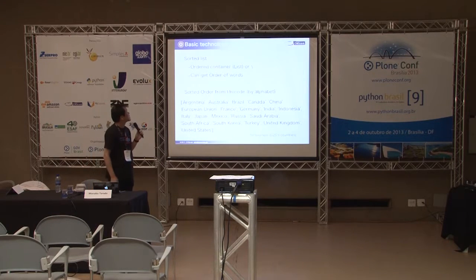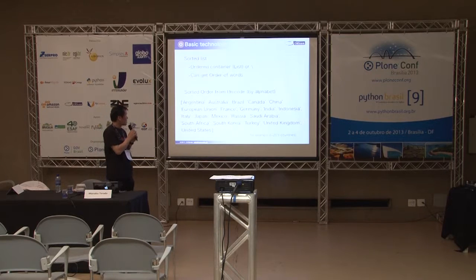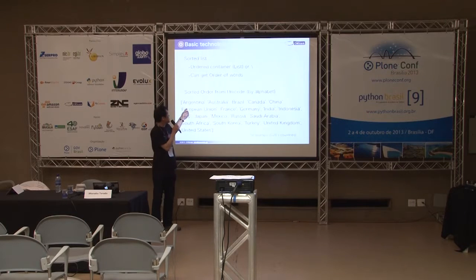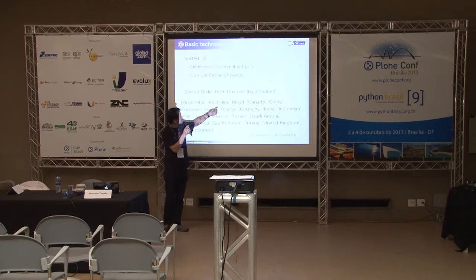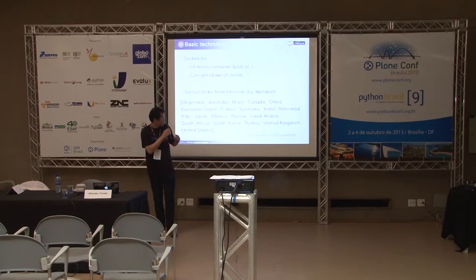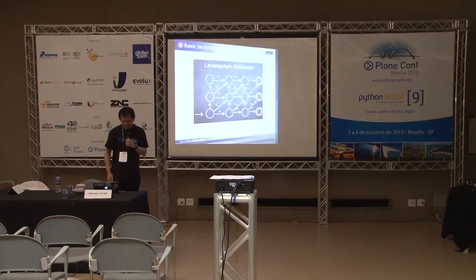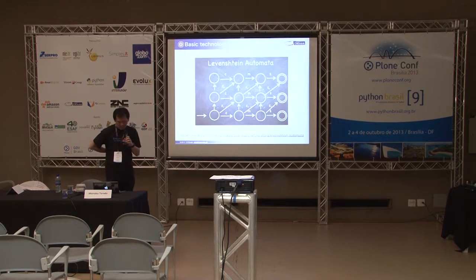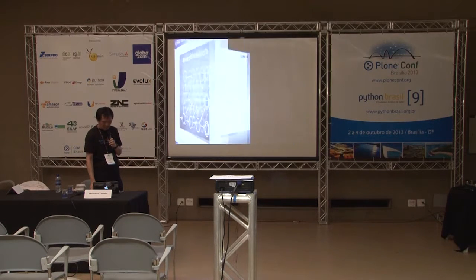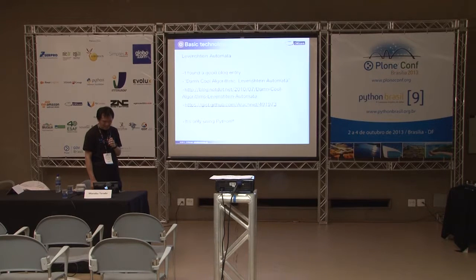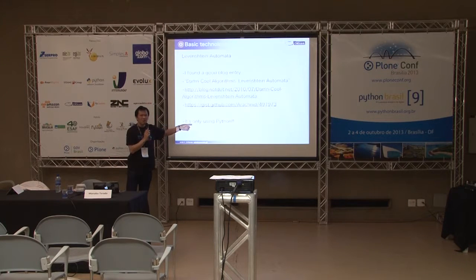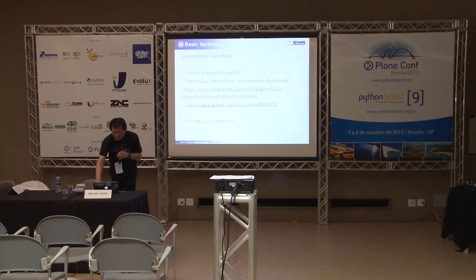Second keyword: sorted list. An ordered container can get the order of words, sorted by Unicode — by alphabet. This example uses G20 countries: Argentina, Australia, Brazil, and so on, up to United States, sorted alphabetically. Last keyword: Levenshtein automata system. Automata is difficult, but I am using existing Python code.